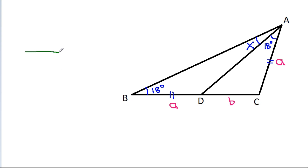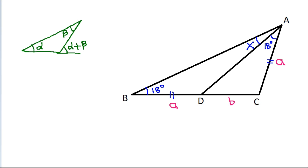Now in any triangle, if one angle is alpha and another is beta, then the exterior angle equals alpha plus beta. So the angle at this vertex will be 18 degrees plus x, that is x + 18 degrees.